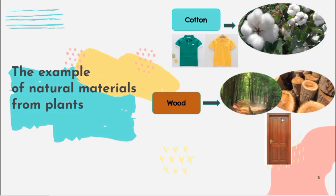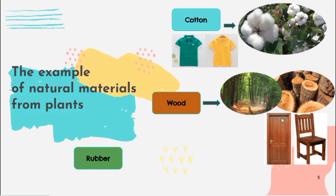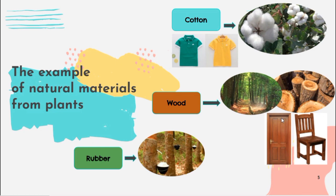We use wood to make doors or chairs. Next, rubber. We can get rubber from rubber trees. We use rubber to make balloons or erasers.